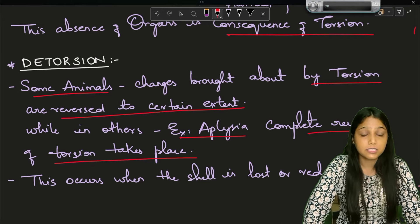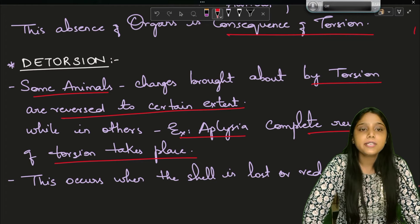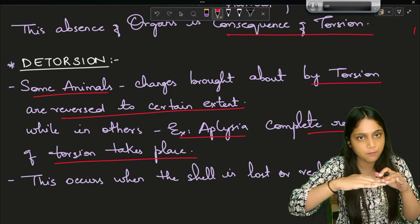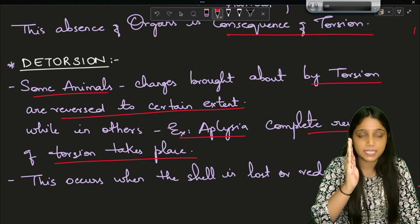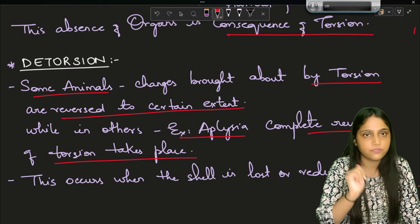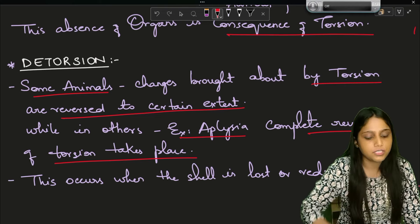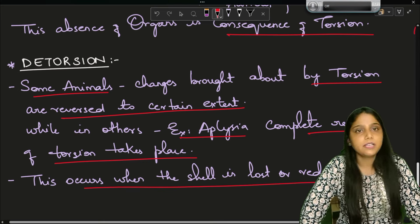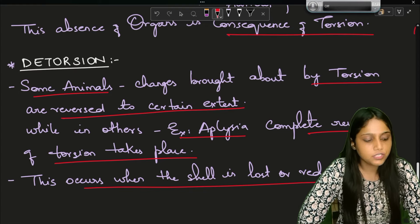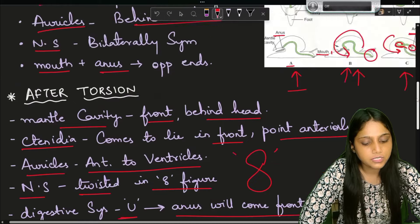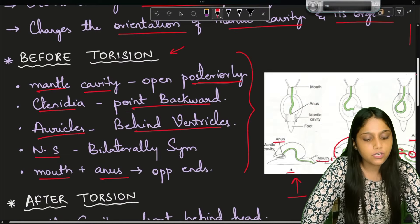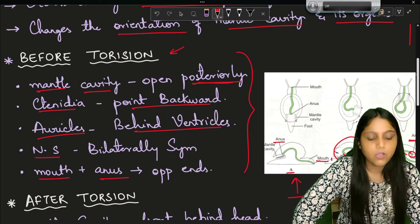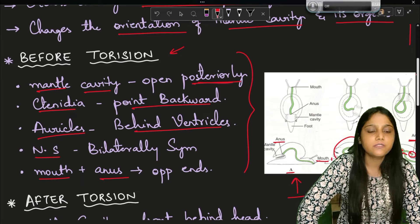This complete reversal is called detorsion. After torsion, these events are getting reversed to a certain extent, and in some organisms complete reversal takes place - for example in Aplysia. Detorsion occurs when the shell is lost or reduced. Because of detorsion: the mantle cavity will again open posteriorly, ctenidia will point again backwards, auricles are found behind ventricles again, and the nervous system is bilaterally symmetrical.